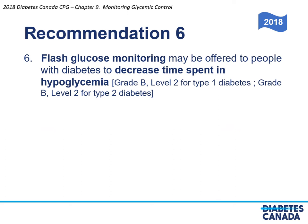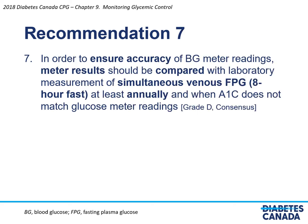Recommendation 6: Flash glucose monitoring may be offered to people with diabetes to decrease time spent in hypoglycemia. Recommendation 7: In order to ensure accuracy of blood glucose meter readings, meter results should be compared with laboratory measurements of simultaneous venous fasting plasma glucose — an 8-hour fast — at least annually and when A1C does not match glucose meter readings.